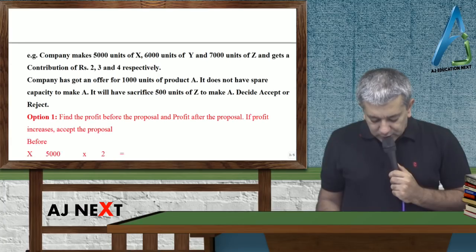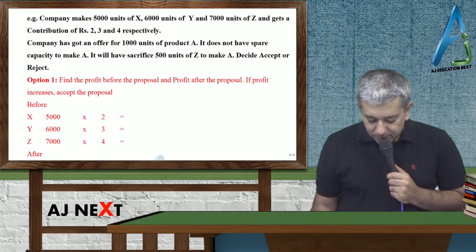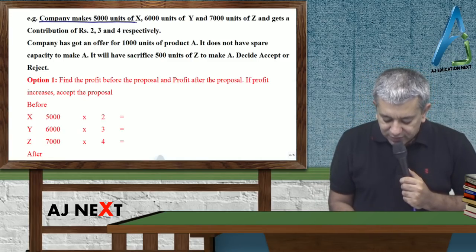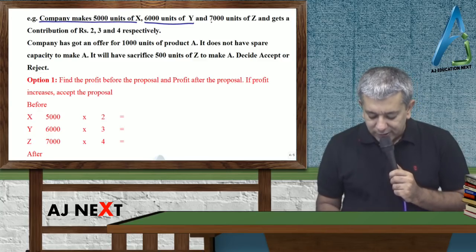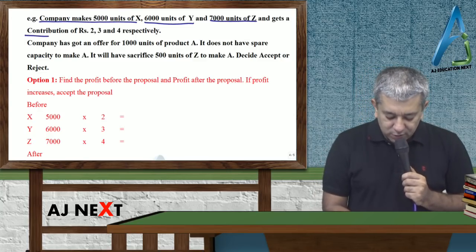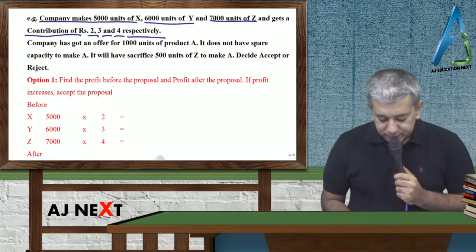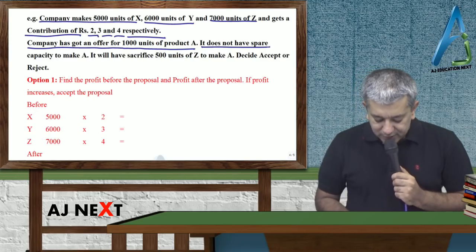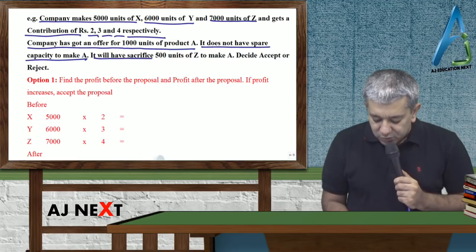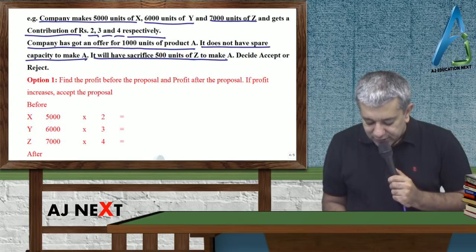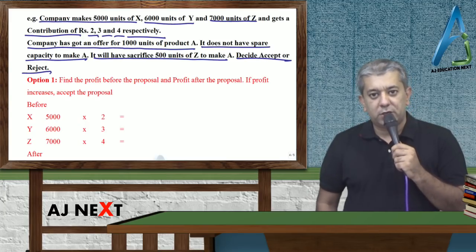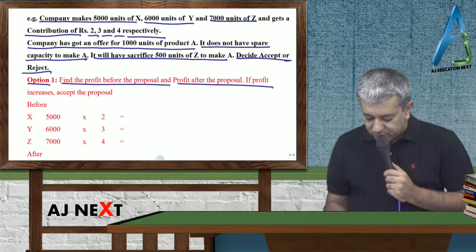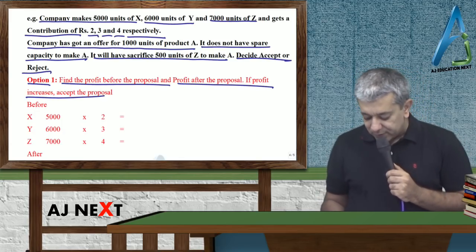In this particular case, yad rakhna kuch bhi relevant hai, agar achha hai, toh ap usko relevant revenue ke ander daal do, agar bura hai, toh ap usko relevant cost ke ander daal do. Now let me show you an example. A company makes 5000 units of X, 6000 units of Y and 7000 units of Z and gets a contribution of 2, 3 and 4 respectively. Company has got an offer for 1000 units of product A. It does not have spare capacity to make A. It will have to sacrifice 500 units of Z to make A. Decide, accept or reject.